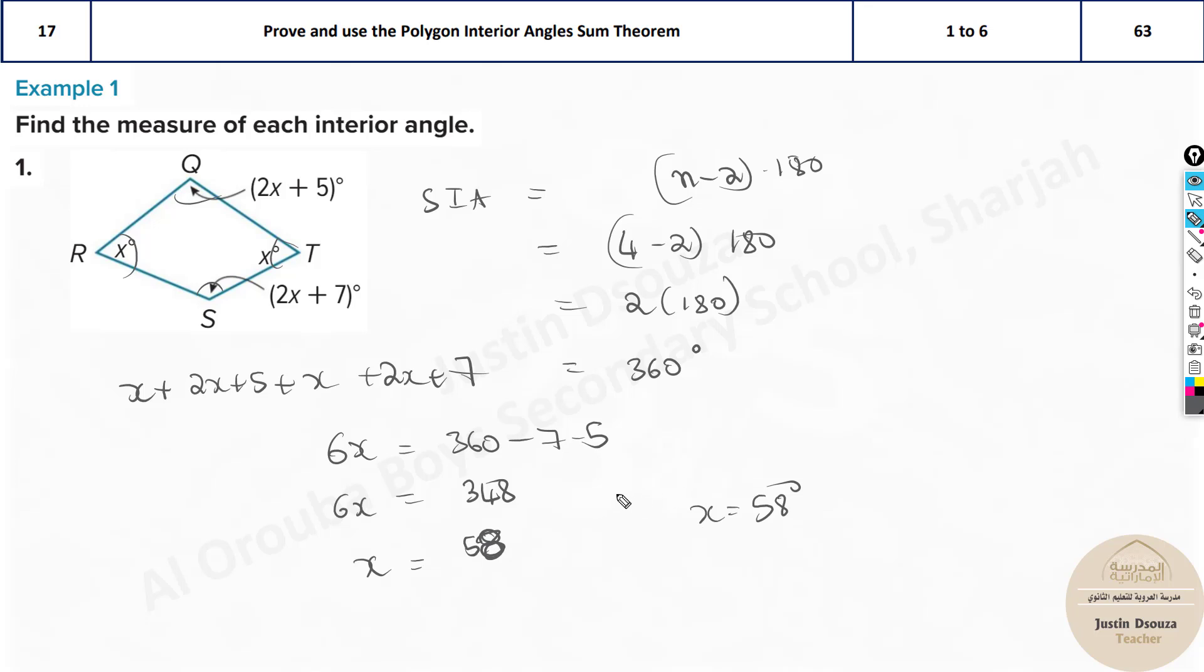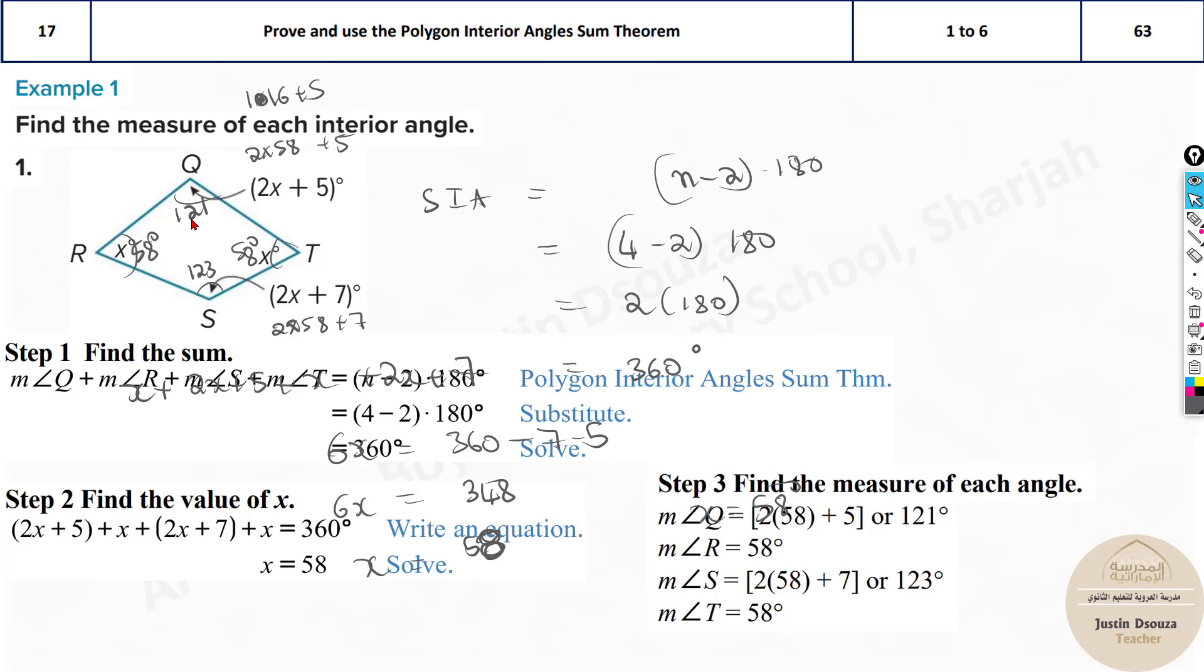Now we got x value, but that's not over. x value is 58. That means R is 58, T is 58. What about the other two angles? It is 2 times 58 plus 5. This is very important. You need to do it. That becomes 121. Now here also, you have to do the same thing. 2 times 58 plus 7 is 123. These are the answers. 121 for Q, R and T are 58 and 58, and lastly we have 123 for S.